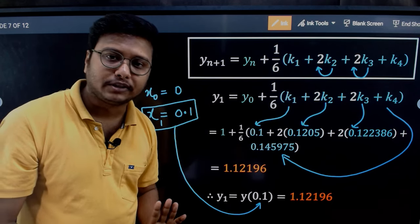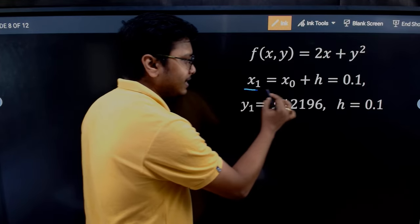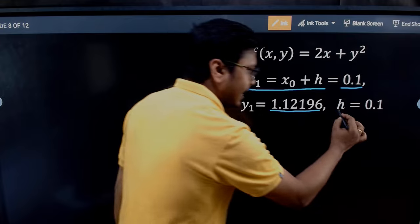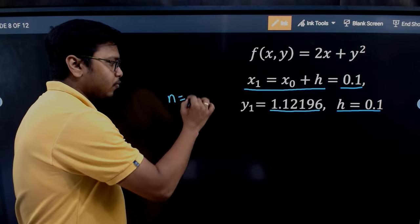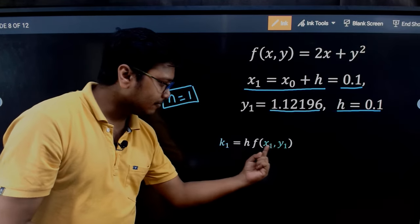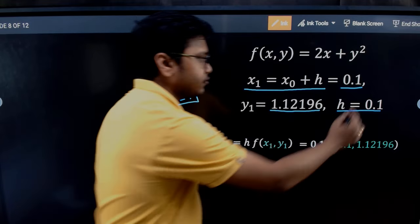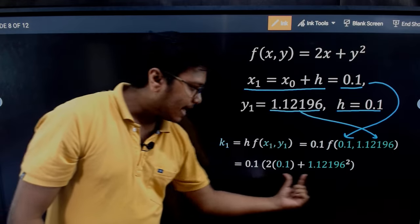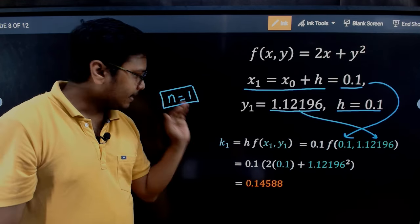Moving on to the second iteration. The function remains the same. Now x1 = 0.1, y1 is the value we just found, and h = 0.1 as before. With n = 1, we apply RK4 again. For k1, we use x1 and y1: x1 = 0.1, y1 = the computed value. Plugging into the same function gives us the new k1.